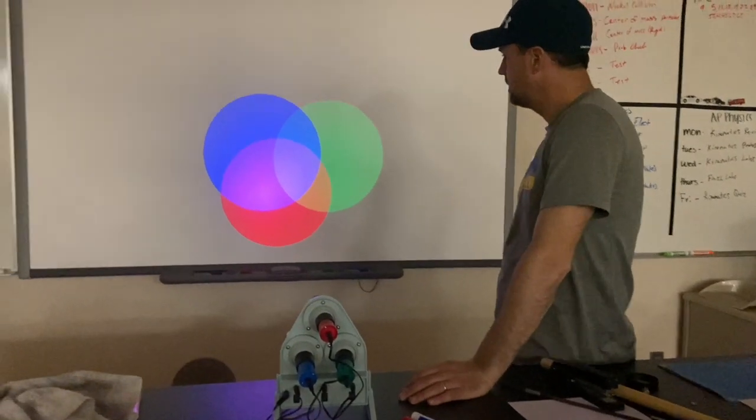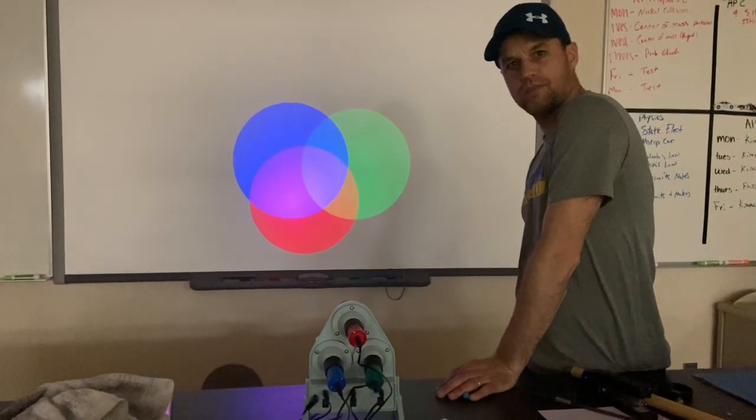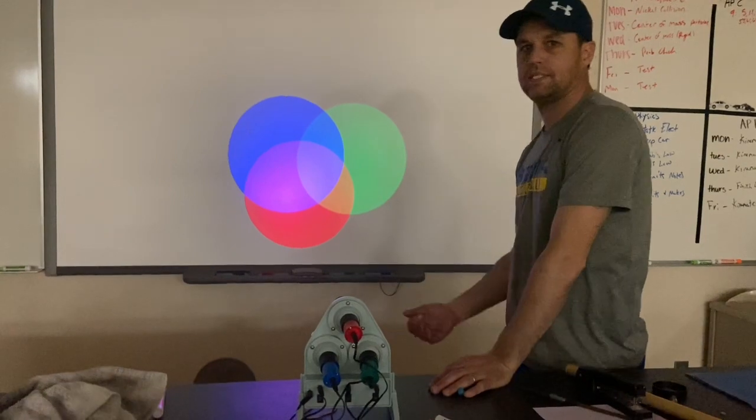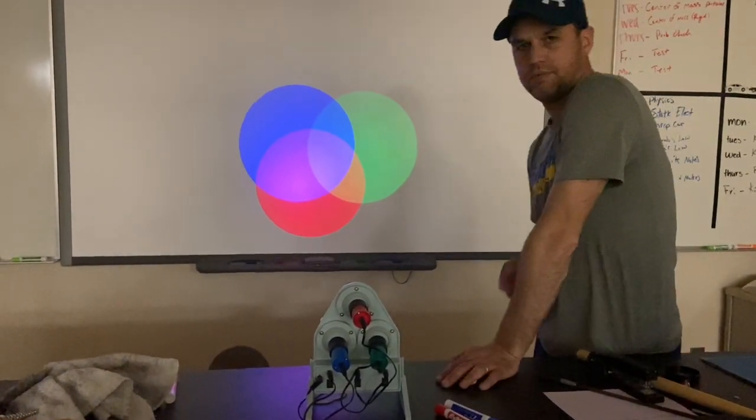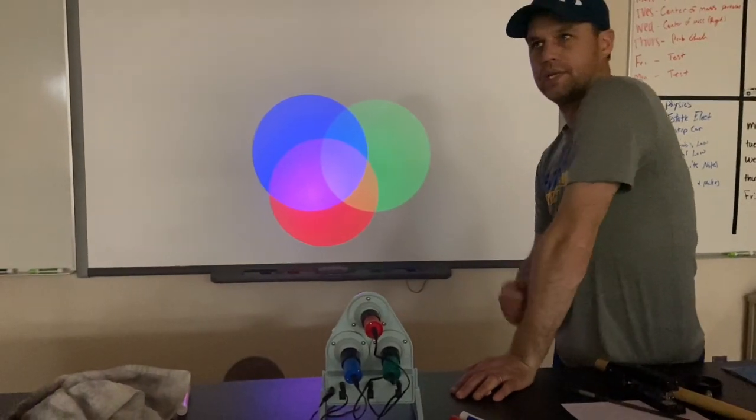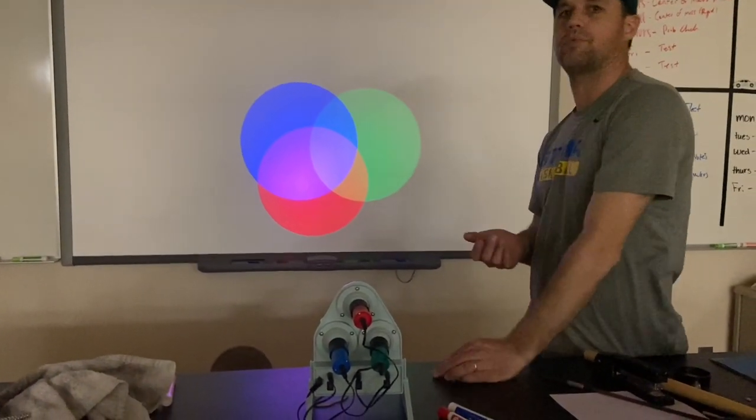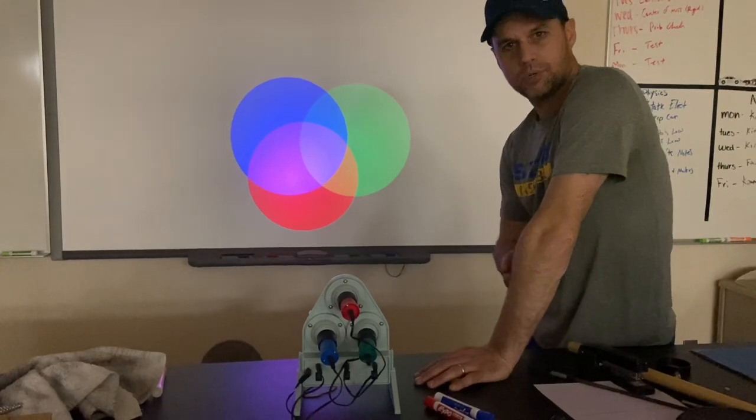All right. So white light is a reflection of all colors of light. Black light is absorption of all colors of light. Isaac Newton was the first person to figure out that you could separate white light into a spectrum, which you probably have all done with a prism, and that's called dispersion.